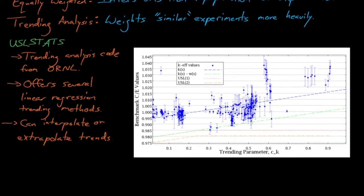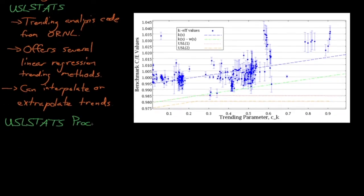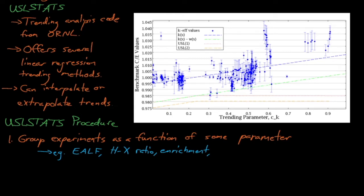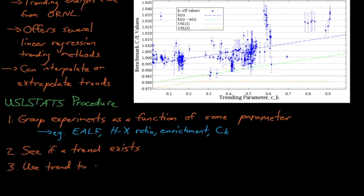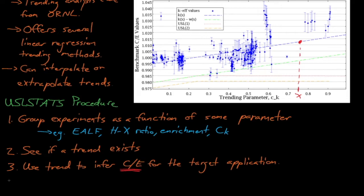So the general USL stats procedure involves first grouping our benchmark experiments as a function of some possible trending parameter. We might have justification to trend on one specific suspicious parameter, but if we don't have a specific parameter in mind, then we can draw trends using multiple parameters until we find a parameter where a statistically significant trend exists. Once we have a trend, we can use that trend to interpolate or extrapolate what the C over E should be for our target application. And then we can use the magic of statistics to develop a 95-95 confidence interval for that C over E.